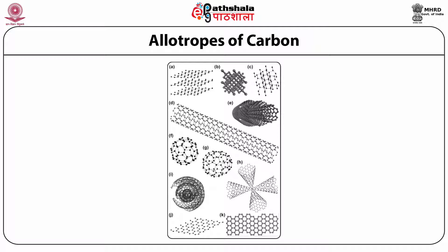Figure A represents graphite; B, diamond; C, lonsdaleite; D, the single-walled carbon nanotube; E, multi-walled carbon nanotube; F, fullerene C60; G, fullerene C76; H, carbon nano horns; I, onion-like carbon; J, graphene; and K, carbon nano ribbons.